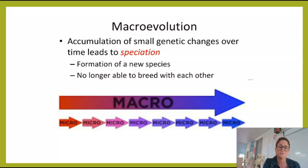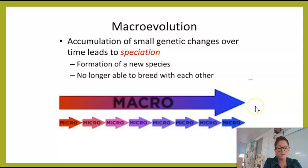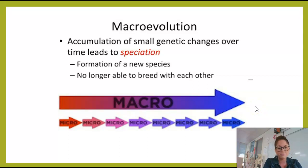Remember, speciation is the formation of a new species. So if we have all these tiny changes and they accumulate, it can lead to the formation of a new species. We know that it's a new species when the two species can no longer breed with each other and have some sort of reproductive isolation, which we'll get to in just a few minutes.